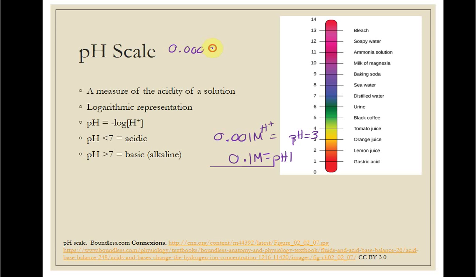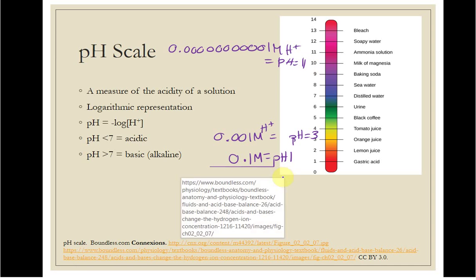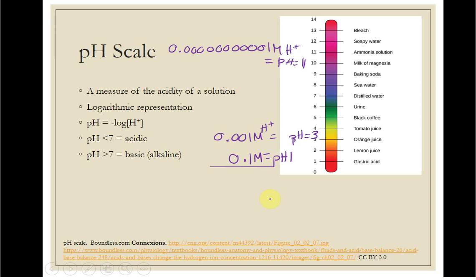Let's do something up here. Ammonia, 1, 2, 3, 4, 5, 6, 7, 8, 9, 10, is this molar H+ to give a pH of 11. It is a log scale. You go down by a factor of 10, your pH goes up by 1.